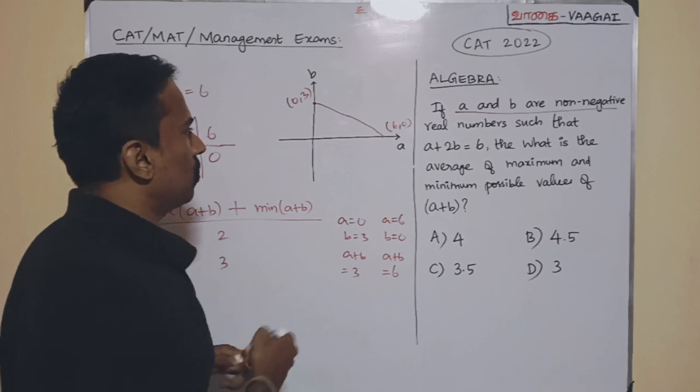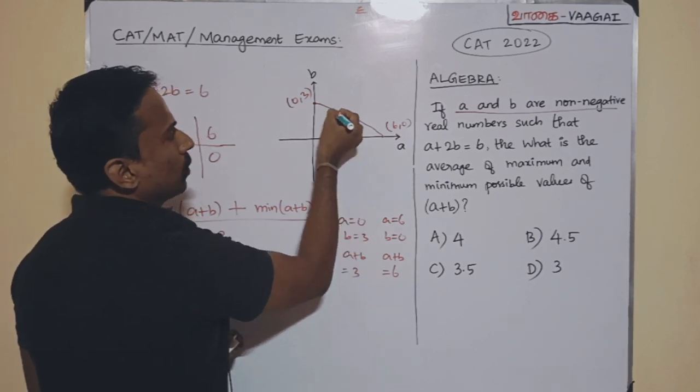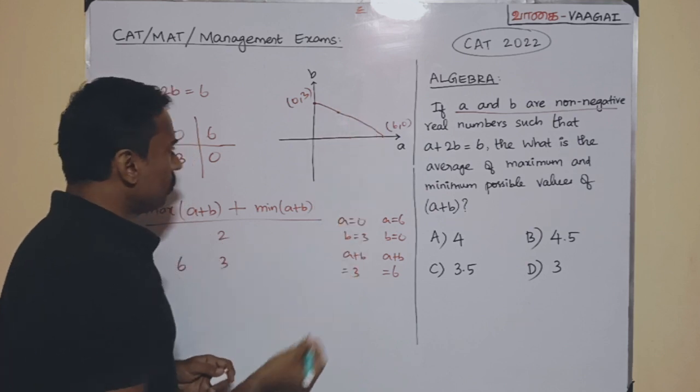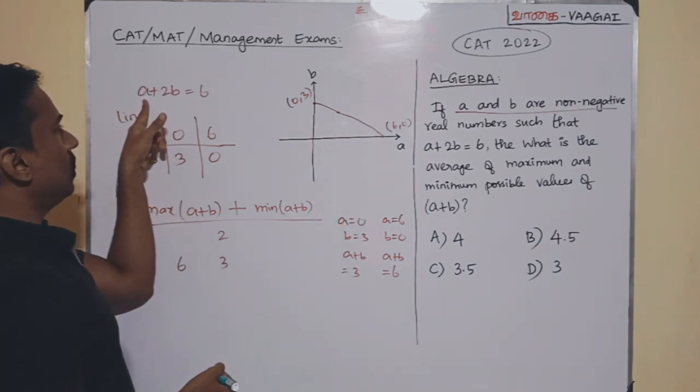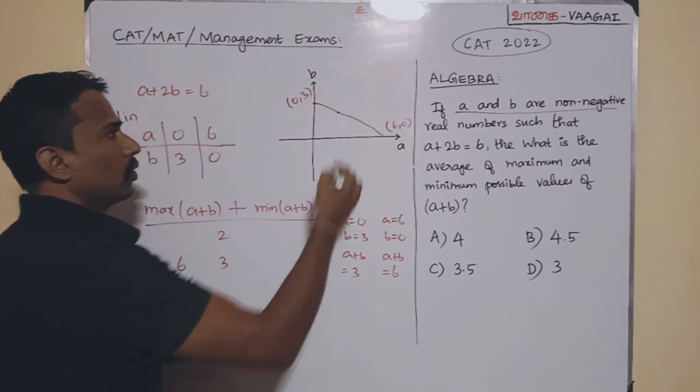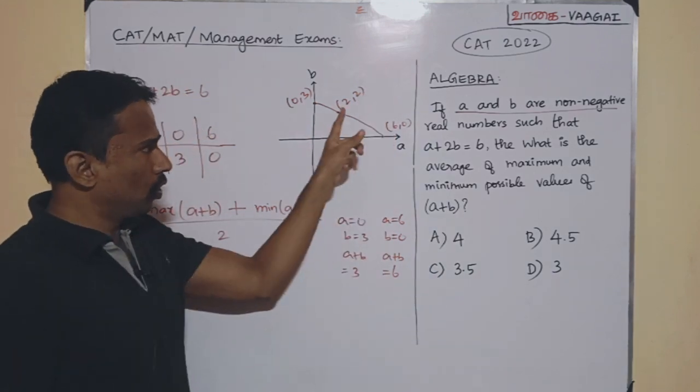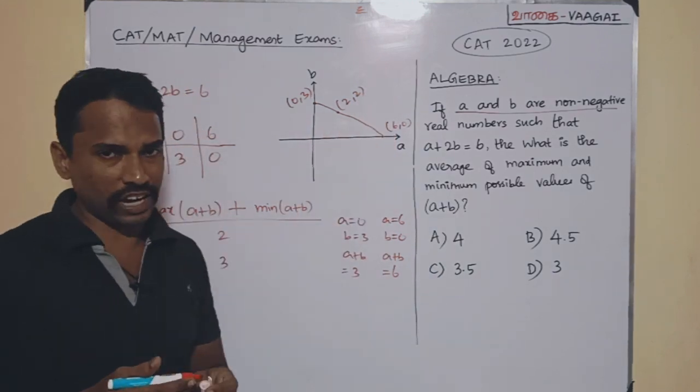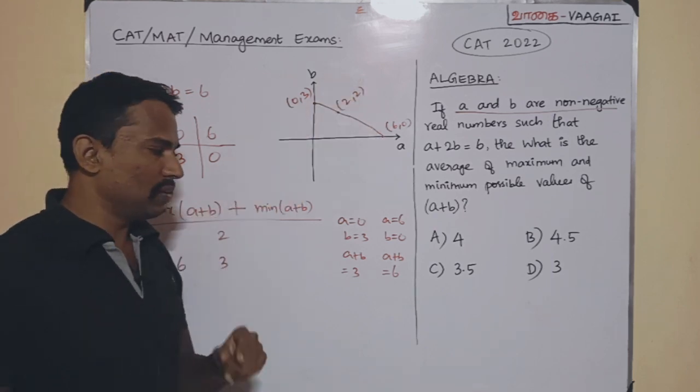Now, for an example, suppose if I take A as 2, if I take A as 2 here, then respectively, what will be the point here? Just take A as 2 here. When you take A as 2, you will be getting 2. 2B will become 4. Then B will become 2. So, you will have 2 comma 2 here. So, the respective point will be 2 comma 2. 2 comma 2 will also be lying in this straight line only. But you check what will be the value of A plus B. A plus B will be 4.